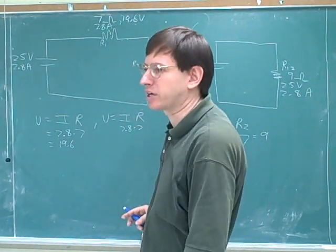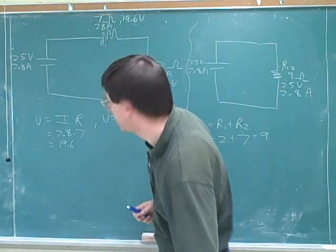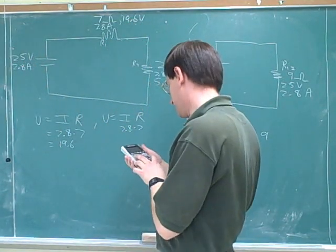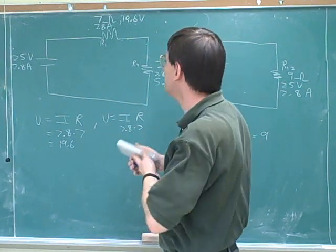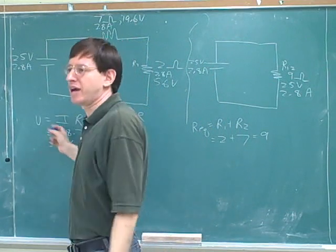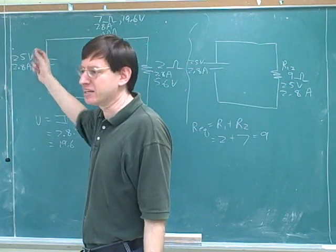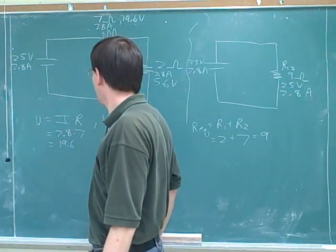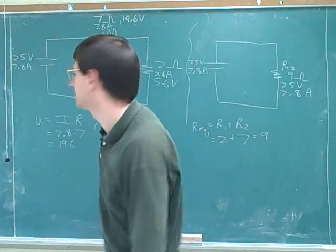There's a way we can now check our work. These two voltages should add up to 25. So let's see, 19.6 and 5.6 equals 25.2. Why don't they equal exactly? Because we were rounding off. Maybe it would have been better to do things to two decimal points. Then it would be easier to check at the end. So you might want to carry out a couple extra decimal points here, because that will make it easier to check your work at the end.